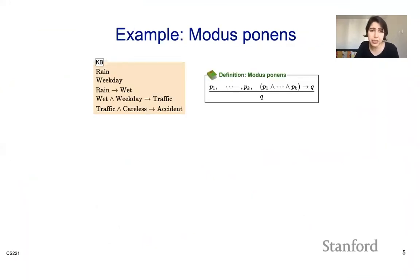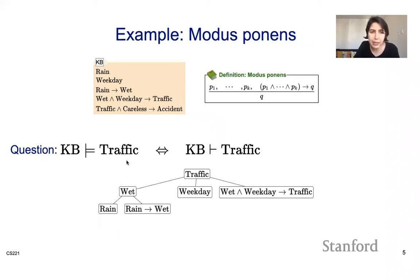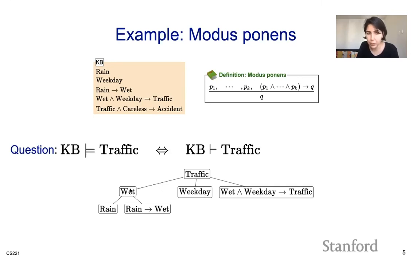Let's look at an example. Say the knowledge base contains: rain, rain implies wet, weekday, and wet and weekday implies traffic. My modus ponens rule is the general form: p1 through pk, and p1 through pk together implying q, gives q. If you ask whether there is traffic, I can check if the knowledge base derives traffic. I have rain and rain implies wet, so applying modus ponens gives wet. I know weekday is in the knowledge base. With wet and weekday and the rule wet-and-weekday implies traffic, I can derive traffic. Because the knowledge base derives traffic and we have soundness and completeness over horn clauses, the knowledge base entails traffic.